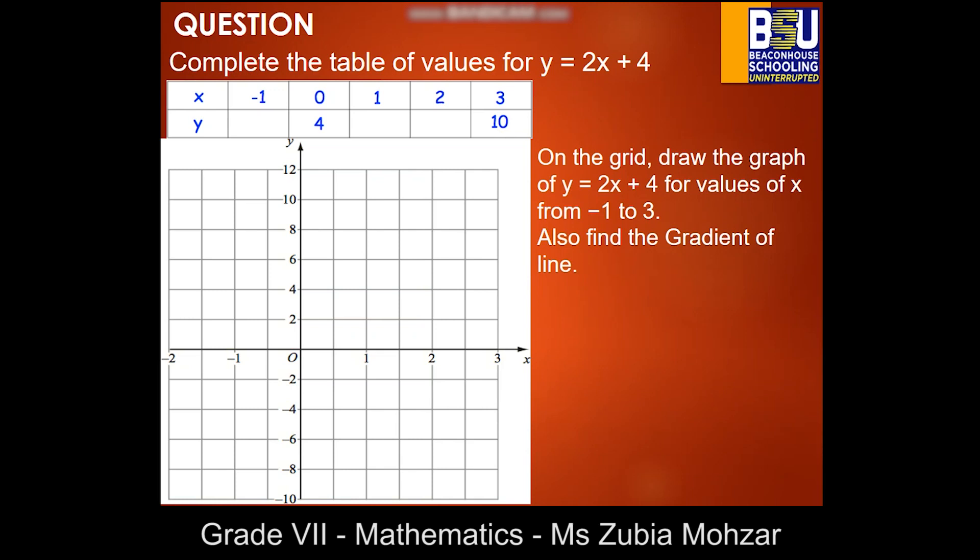The slope-intercept form was enough to tell us the quadrants through which the line passes. Now look at this question: you have to complete the table of values for the linear equation y equals 2x plus 4, draw the graph for x values from minus 1 to 3, and also find the gradient of the line. Try to do this question.